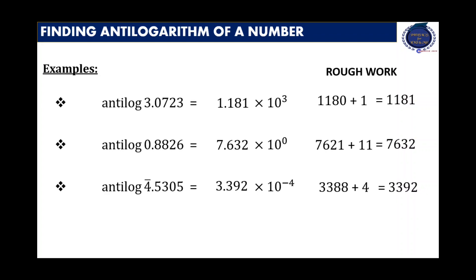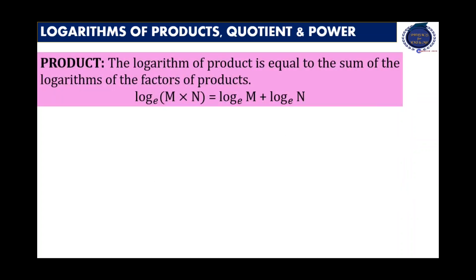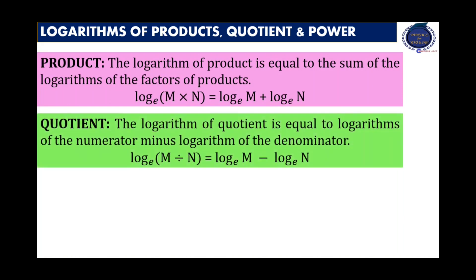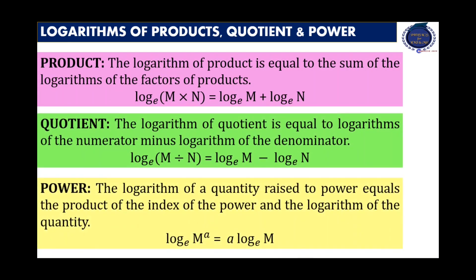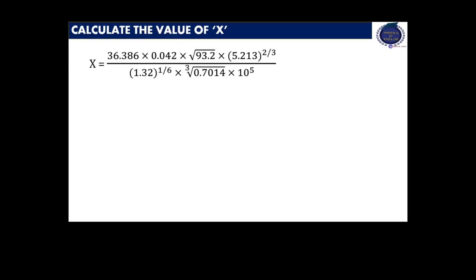We have learnt how to find out the logarithm of a number and also the anti-logarithm of a number. Quick glance over the rules in logarithms: rule of product, rule of quotient, and rule of power. Since we have understood how to use the logarithm and anti-logarithm table, we are going to calculate the value of x. It is a very complex problem in which I tried to include every trick that can be learned using the logarithm.